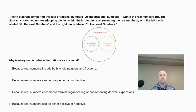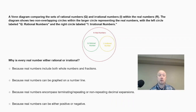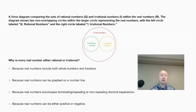A Venn diagram compares the sets of rational numbers Q and irrational numbers I within the real numbers R. The diagram shows two non-overlapping circles within the larger circle representing real numbers, with the left circle labeled Q (rational numbers) and the right circle labeled I (irrational numbers). Why is every real number either rational or irrational? Is it because real numbers include both whole numbers and fractions, because they can be graphed on a number line, because they encompass terminating, repeating, or non-repeating decimal expansions, or because they can be either positive or negative?